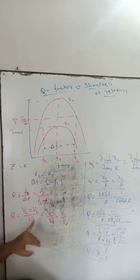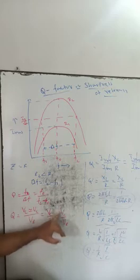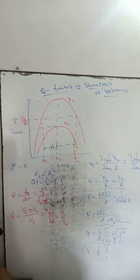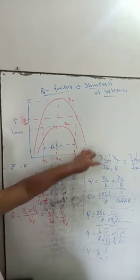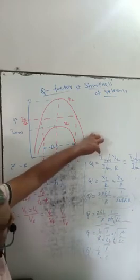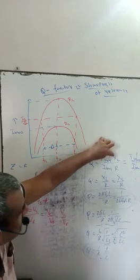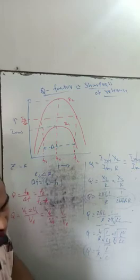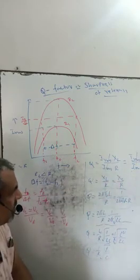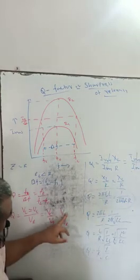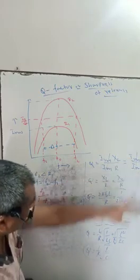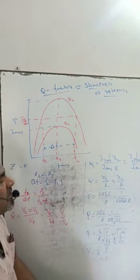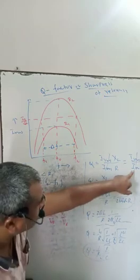Q equals V_L by V_R or V_C by V_R. In the resonant circuit, by Ohm's law V equals I into R, and the resonant circuit current is I_RMS. The effective AC resistance of the inductor is X_L. Voltage across the resistor is I_RMS into R. Similarly, voltage across the capacitor V_C equals I_RMS into X_C (capacitive reactance), divided by voltage across the resistor I_RMS into R.